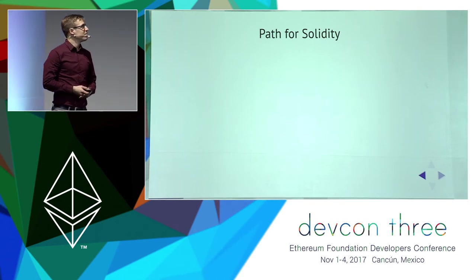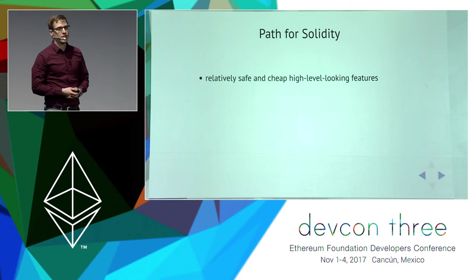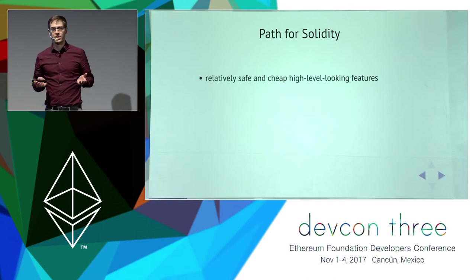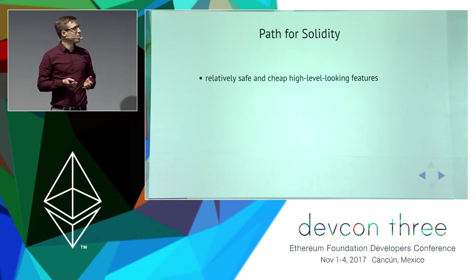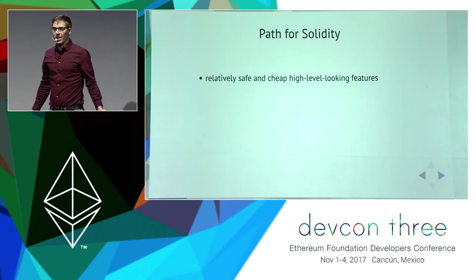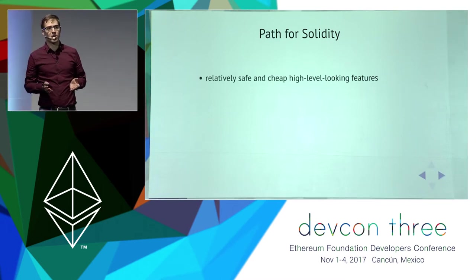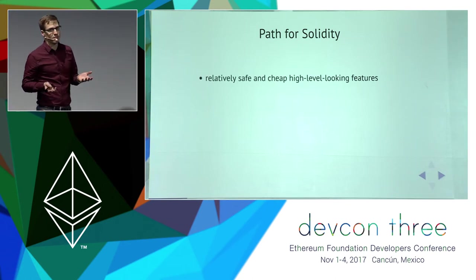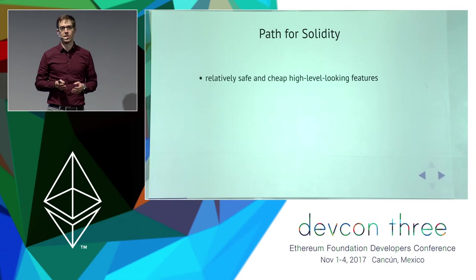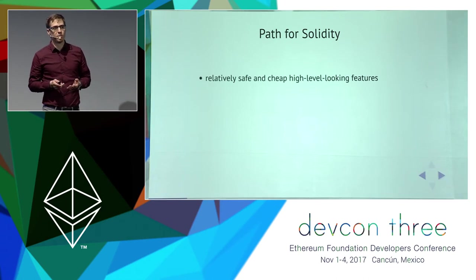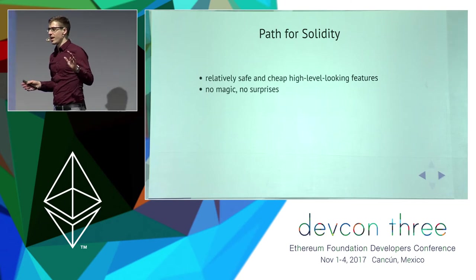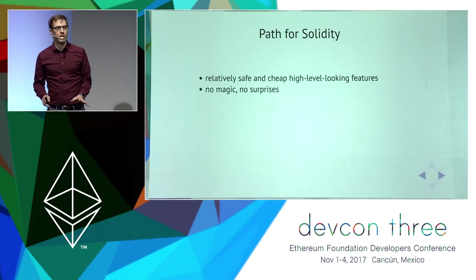The path we want to go is we want to keep features that are relatively safe and look like high-level features, but most of them are actually quite low-level. So we want to have features that look like high-level features but are still cheap. And we want to remove everything that can surprise users or has some magic involved.